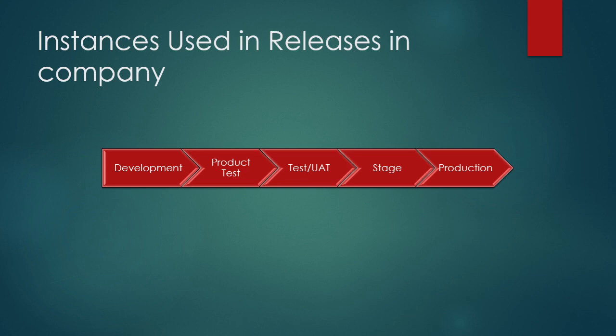When developing in real time, companies follow these release stages: first you build in the development instance where development activities are written, then you move to the test instance where everything is tested, then to UAT. Once everything looks fine in test and UAT, you move to the stage instance where all scenarios are tested. If all scenarios pass, you finally move to production and deploy your application live. These are the various release stages followed in real time.